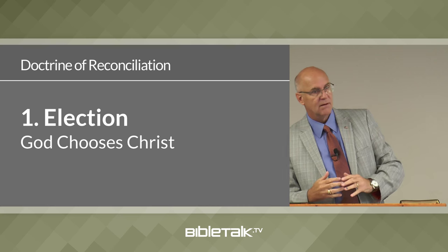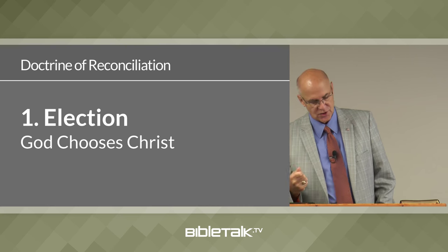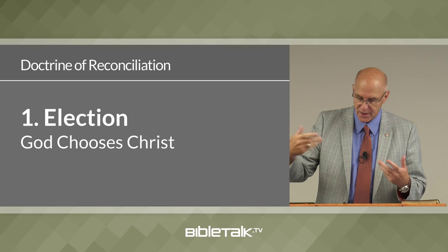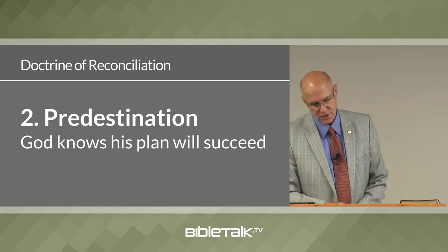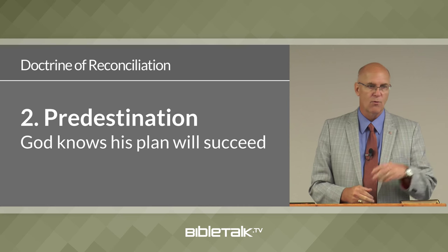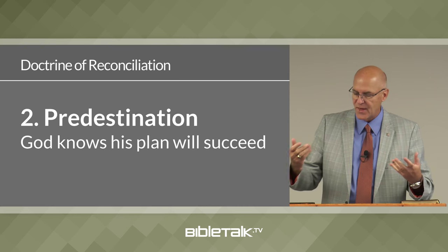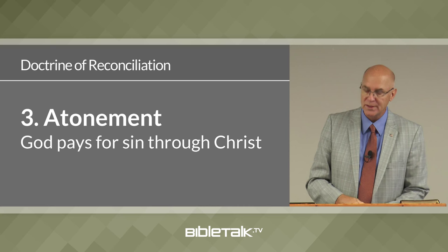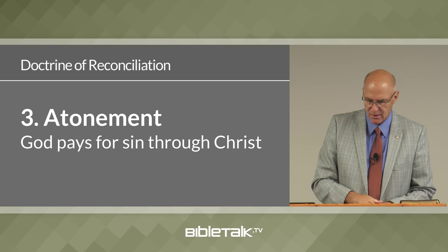The first sub-doctrine is the doctrine of election, which teaches that God chooses Christ — that's the only choice God makes — to be the one to complete His plan. The second sub-doctrine is predestination: God knows that His choice of Christ will succeed in reconciling men back to Himself. Not that one is going to be saved and one lost — that's not correct. It's that God knows in advance that His plan will succeed.